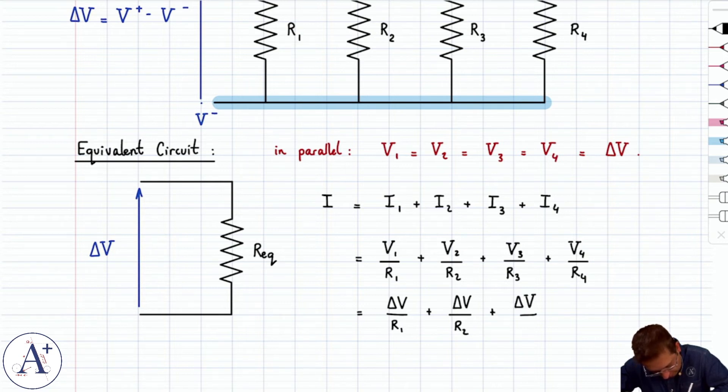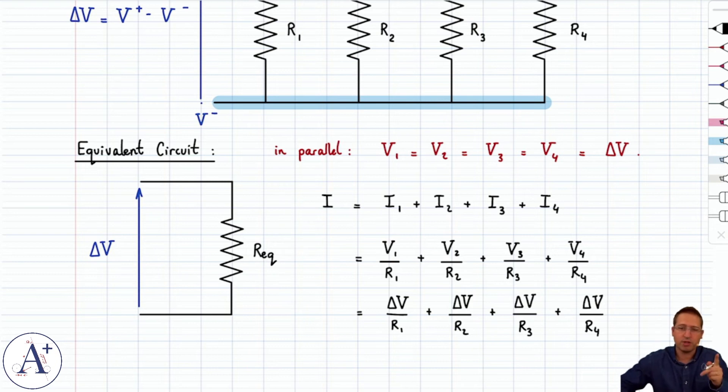And the goal here is to figure out the equivalent resistance. In other words, what would the value of R equivalent have to be so that this single resistor here behaves the same as the four resistors above while being connected across the same voltage?